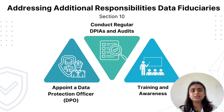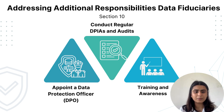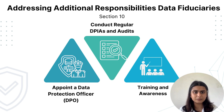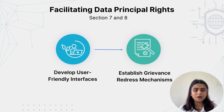Second, conduct regular assessments — periodically review data protection practices to identify and mitigate risks. For example, a financial institution such as HSBC Bank conducts regular data protection assessments as part of its compliance strategy. These assessments help identify vulnerabilities, ensure robust security measures, and demonstrate compliance with international data protection laws. Third, training — educate employees about data protection to ensure ongoing compliance, including practical examples, role-playing, and updates on the latest regulatory changes.